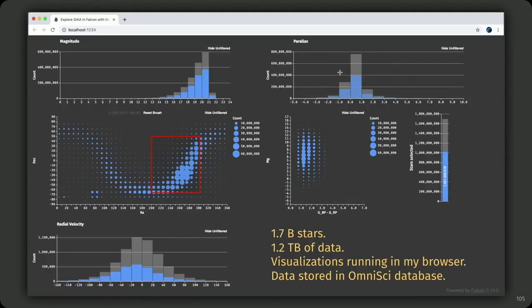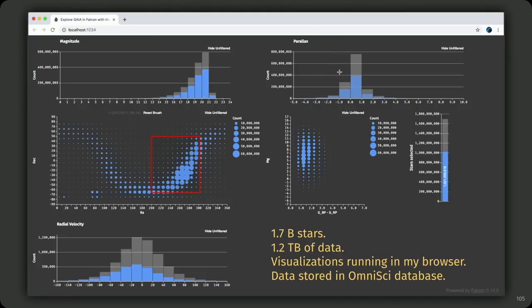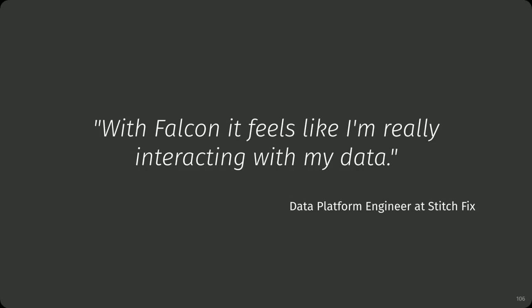Because of these trade-offs, I was able to build a demo using data from the Gaia Space Telescope — about 1.7 billion stars, a terabyte of data — with all visualizations running in a browser on this computer, butter smooth because we decoupled interactions from the raw data. With this, we're able to interact with datasets three orders of magnitude larger than what was previously possible in real time. When I put this code online, a platform engineer at Stitch Fix found it and integrated it into their production environment. He said: with Falcon, it feels like I'm really interacting with my data — something they weren't used to before.